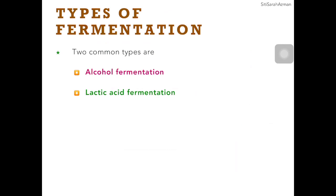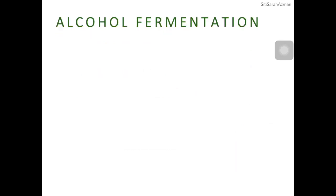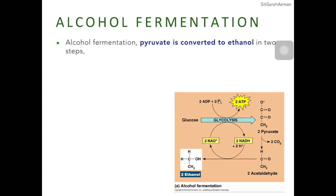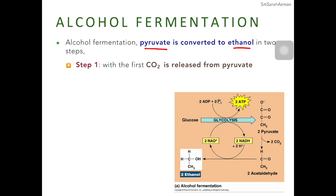The two common types are alcohol fermentation and lactic acid fermentation. The first type is alcohol fermentation. The process happens after glycolysis, where pyruvate will be converted into ethanol in two steps. The first step is where carbon dioxide will be removed from pyruvate. Pyruvate is a three-carbon molecule, and since carbon dioxide has been removed, pyruvate becomes a two-carbon molecule called acetaldehyde.